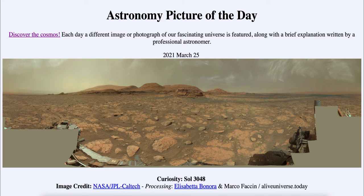Today's picture for March the 25th of 2021 is titled Curiosity Sol 3048. This is an image taken by the Curiosity rover on Mars, and Curiosity has now been there for almost a decade — nine years in just a couple of weeks.